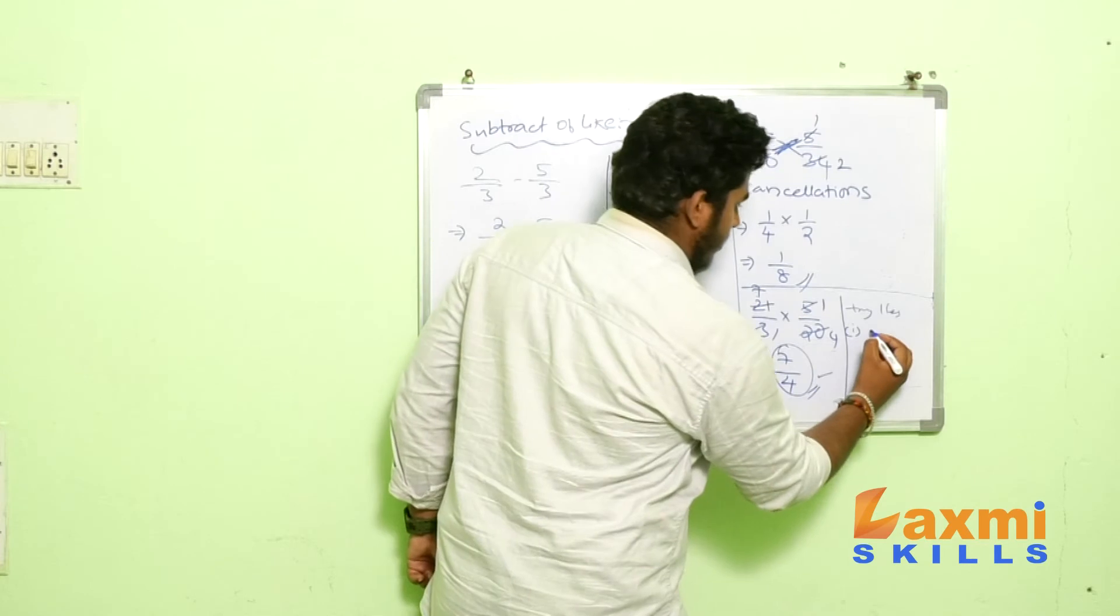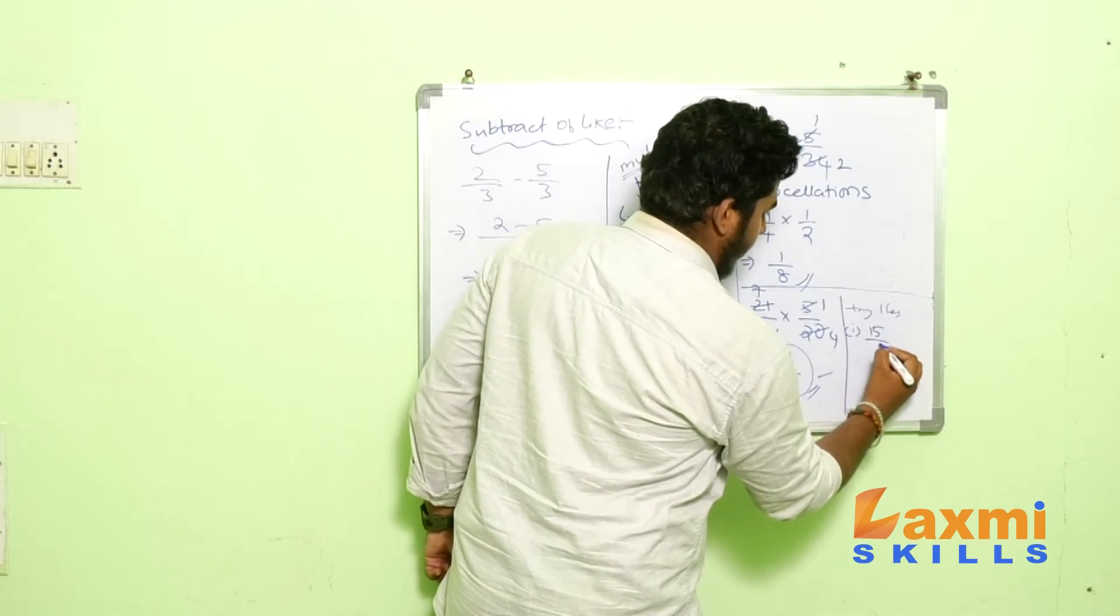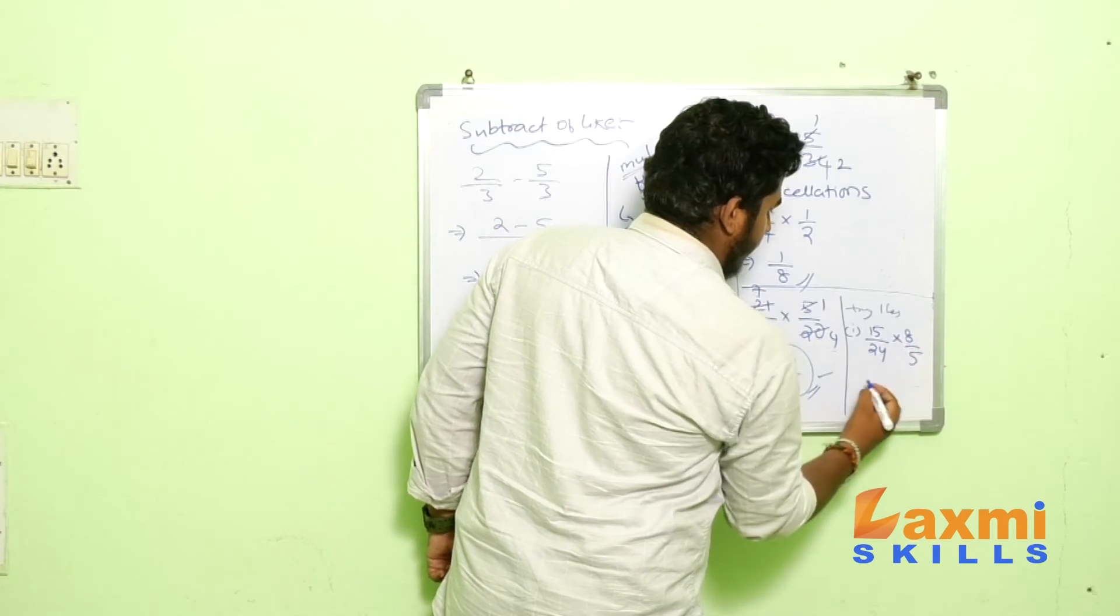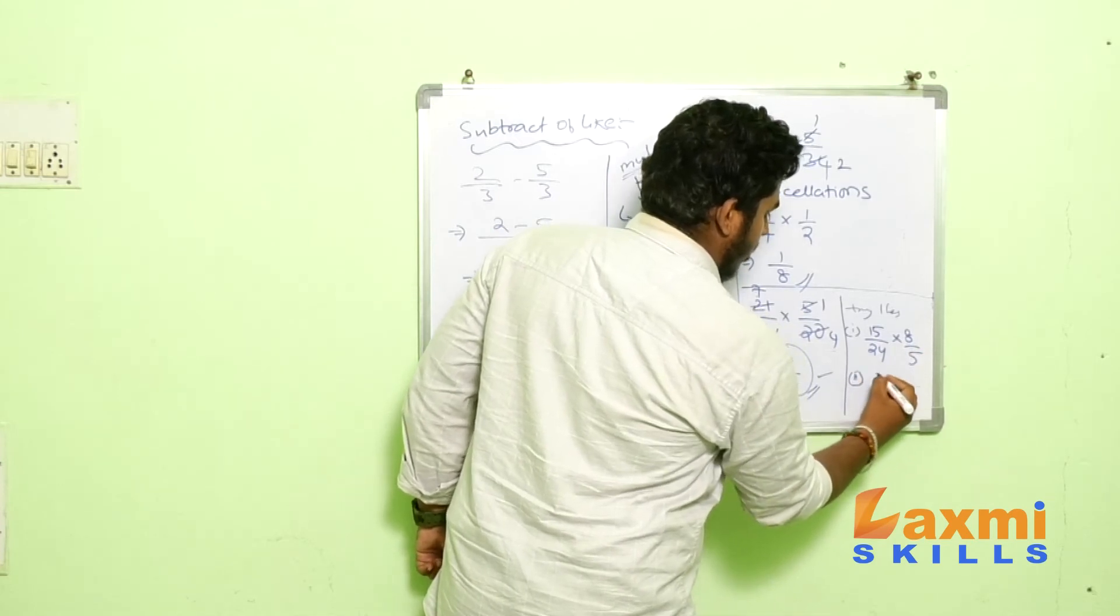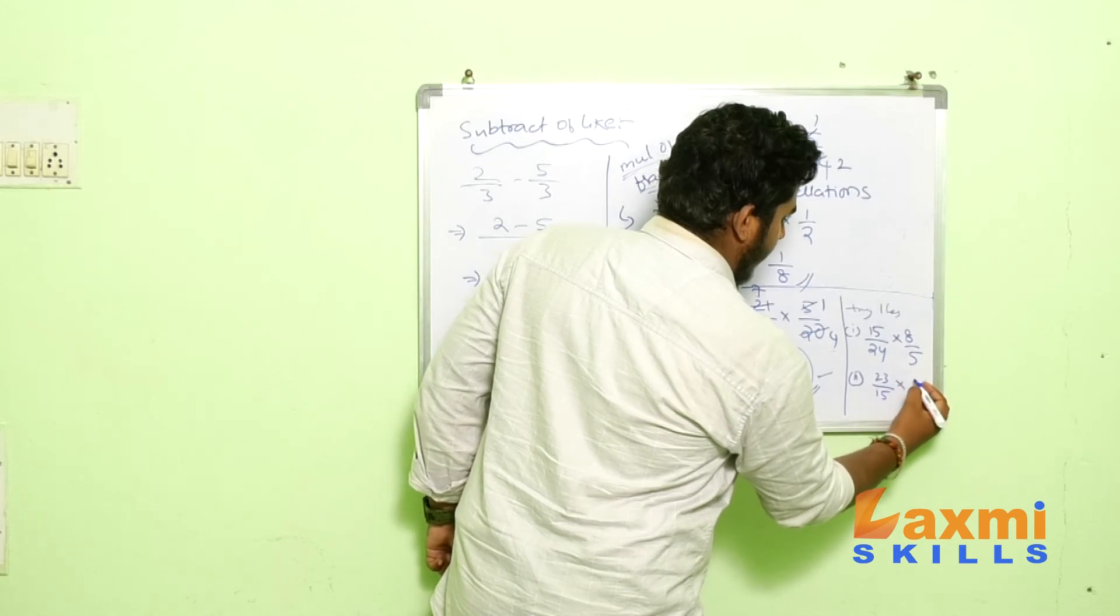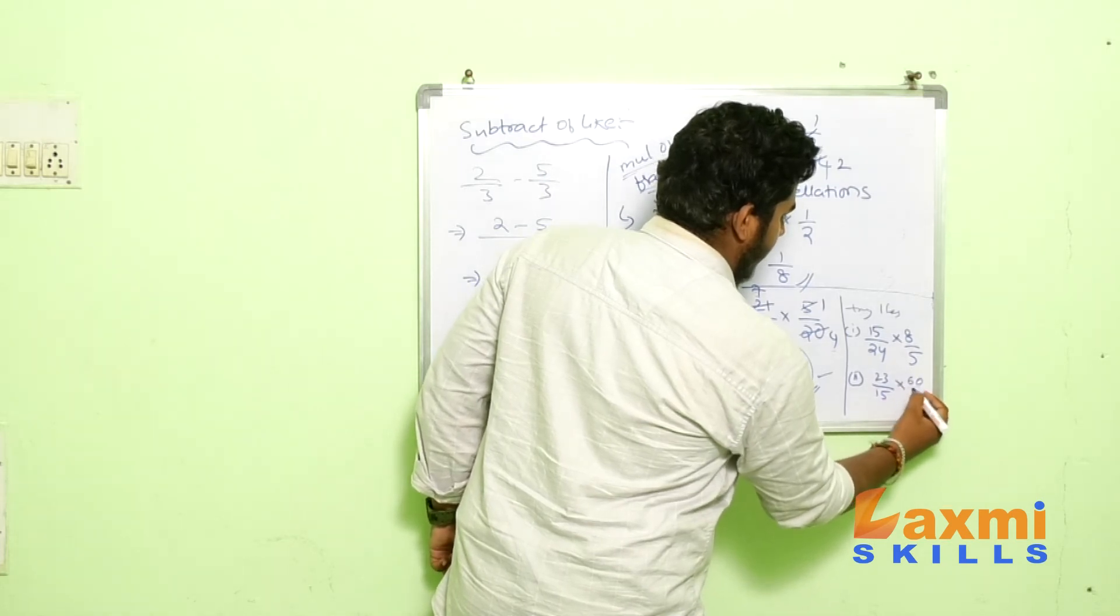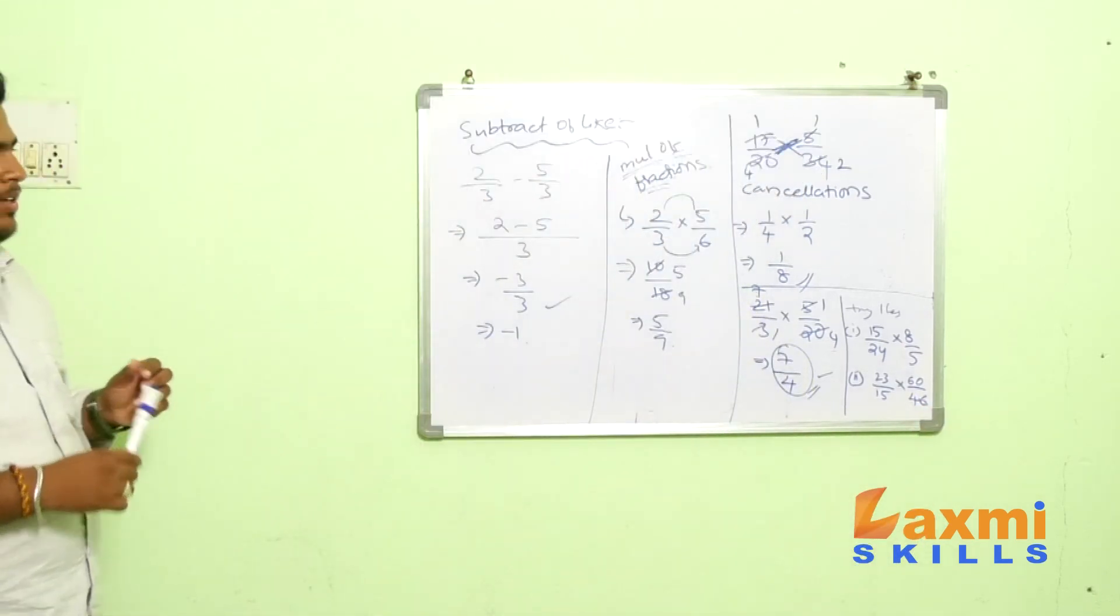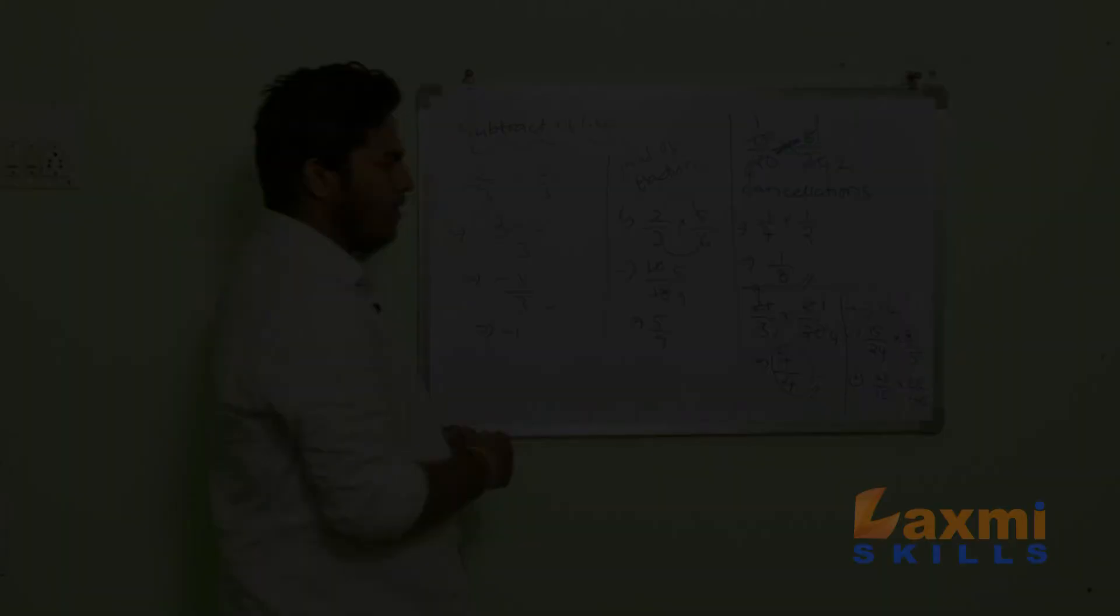Best examples: 15 by 24 into 8 by 5. Second one: 23 by 15 into next 60 by 46. So, do it and write the same formula and you will get all the simplest form.